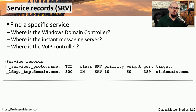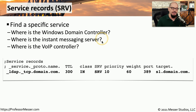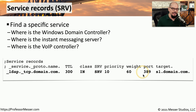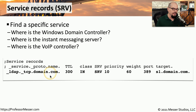There may be times when you want to use DNS to help clients on your network find another service. In those cases, we'll create a service record, or SRV. If your network has a Windows domain controller, an instant messaging server, or a voice over IP gateway, you might create a service record identifying where that particular device is. For example, on this network there is an LDAP server located at s1.domain.com.